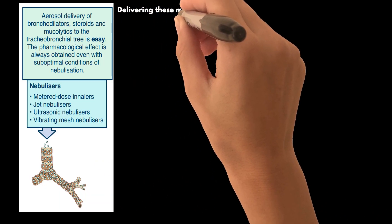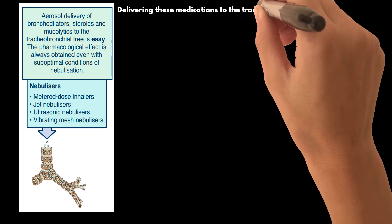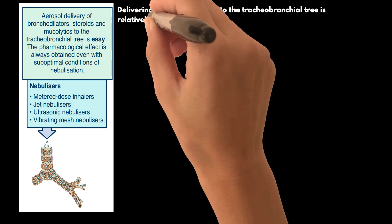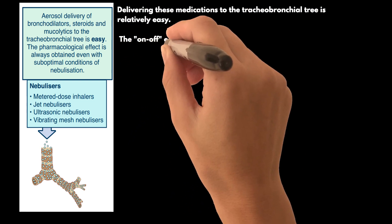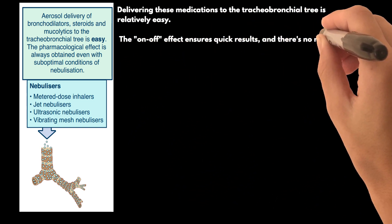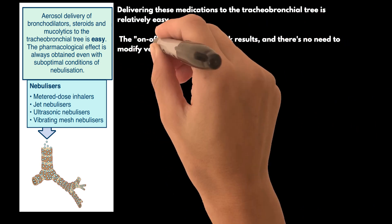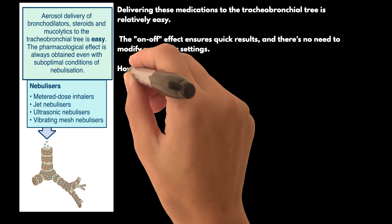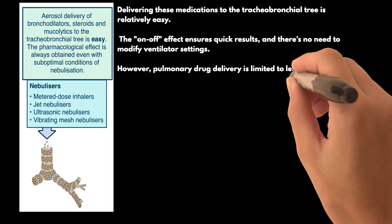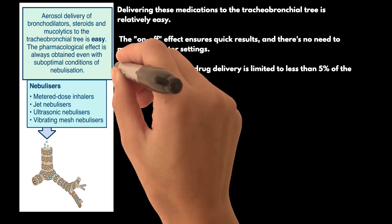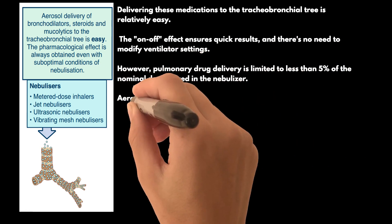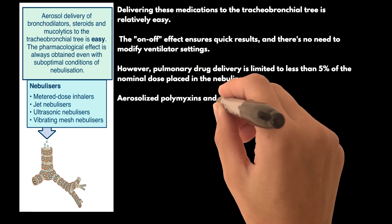Delivering these medications to the tracheobronchial tree is relatively easy due to its proximity to the ventilator circuits. The on-off effect ensures quick results, and there's no need to modify ventilator settings. Aerosol bronchodilator therapy during high-flow nasal cannula oxygen is possible with a nebulizer placed at the inlet of the heated humidifier. However, pulmonary drug delivery is limited to less than 5% of the nominal dose placed in the nebulizer.